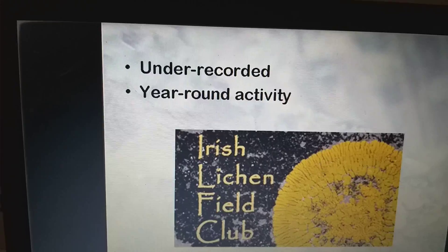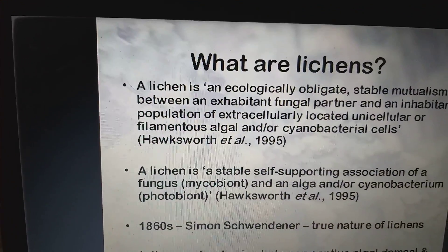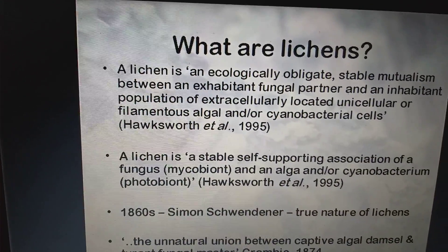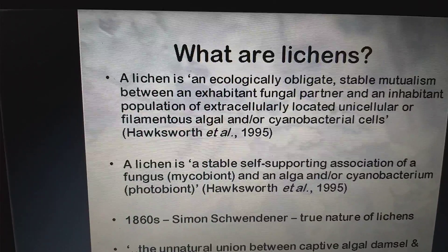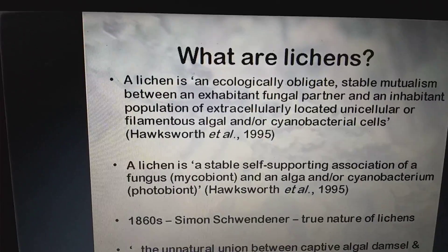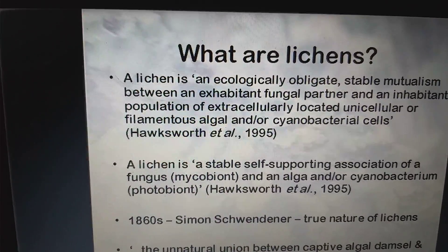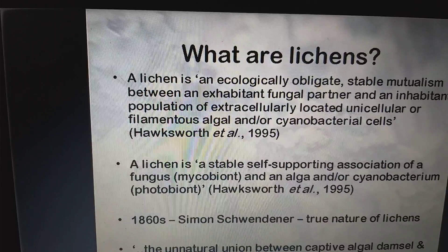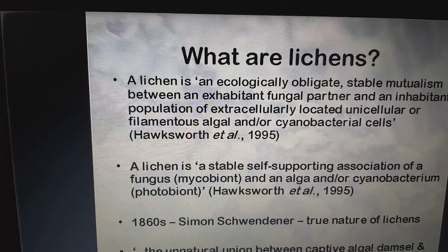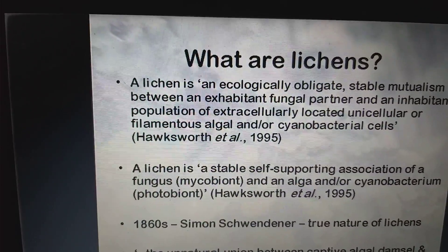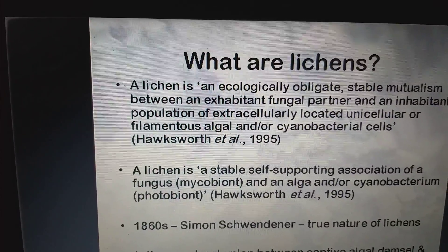They are under-recorded nowadays. A lichen is an ecologically obligate and stable mutualism between an ex-habitant fungal partner and an inhabitant population of extracellularly located unicellular or filamentous algal or cyanobacterial cells.